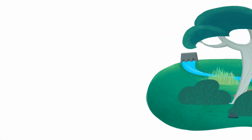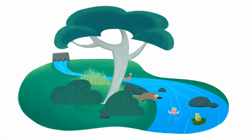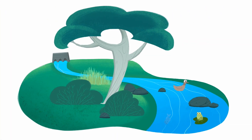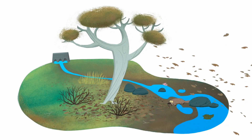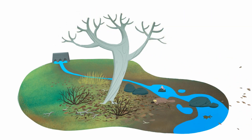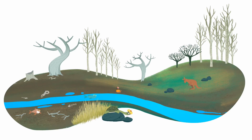This has reduced the amount of water flowing down our rivers, onto our floodplains and into our wetlands. These changes have affected the health of our rivers and the survival of native plants and animals.